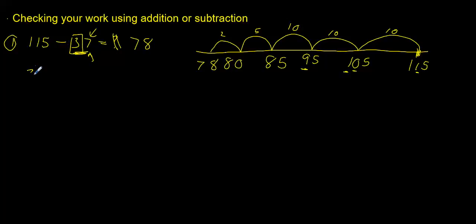So that would mean that we take 37, which is what we had here, plus what we think our answer is, 78, and it should give us the answer that we have here, 115. So this is the inverse: I started with the question which was subtraction and I've checked it with the inverse which is addition.